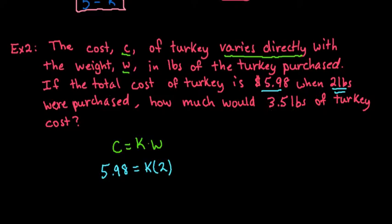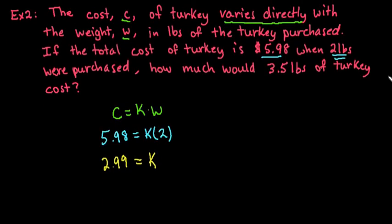So the first thing that we need to do is find k in order to find the cost for 3.5 pounds. So if we solve this, we do end up with k equals 2.99. So that's telling us that this constant of variation right now is telling us the price, not the total cost, let me put the price. So the price of turkey is 2.99 per pound. So that's what this constant represents this time.